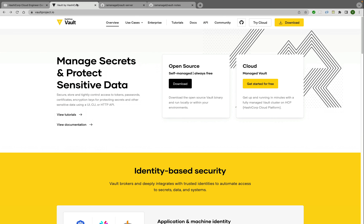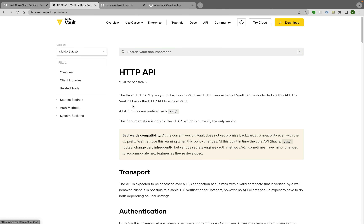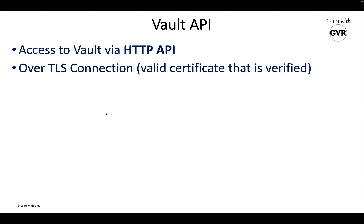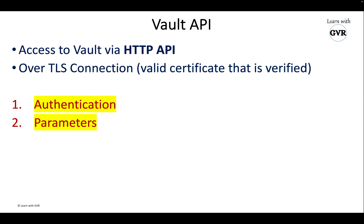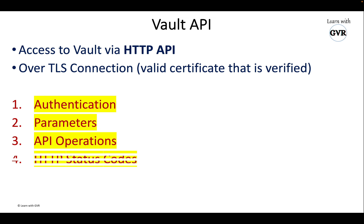If I go to the Vault documentation and navigate to the API section, there are certain rules to follow in order to access the API. First is authentication — without authenticating you cannot just hit the server. Second is parameters — you need to pass parameters. Third is the API operation — what kind of operation you want: GET, read, write, or delete. Fourth is the HTTP status code — once you fire the API query you will receive a response code.